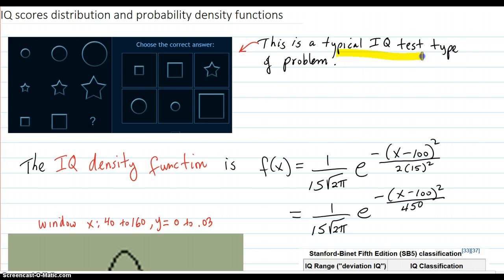So a typical IQ test type of problem. You look at this, it doesn't show you any directions or anything. It just says choose the correct answer for this question mark. It doesn't even say that, you have to see the question mark. So that's the type of an IQ test.